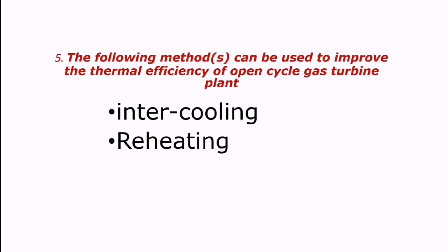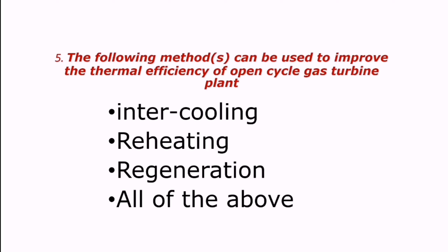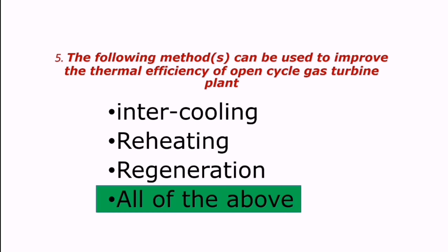Question: Which methods can be used to improve the thermal efficiency of an open cycle gas turbine plant? The methods are intercooling, reheating, and regeneration. All of the above is the right answer.